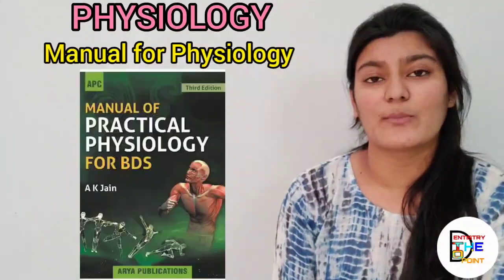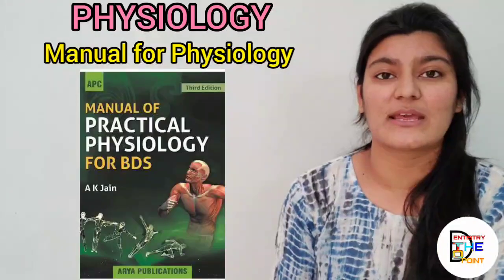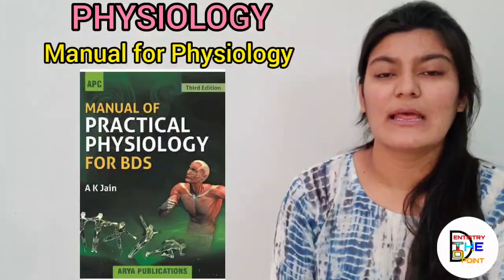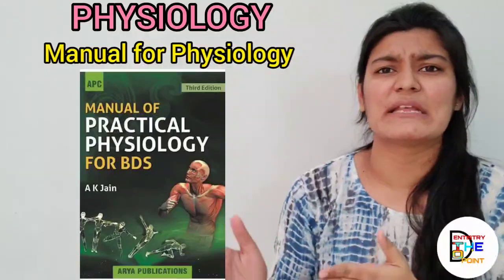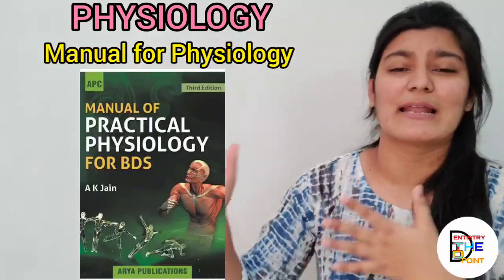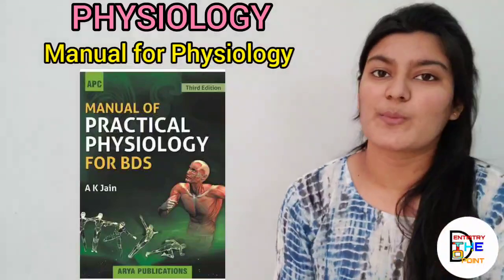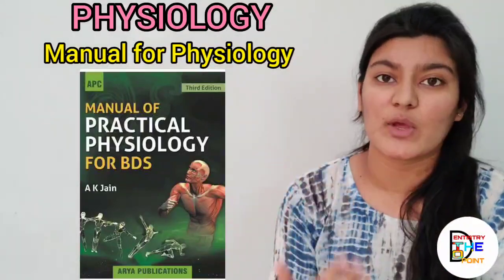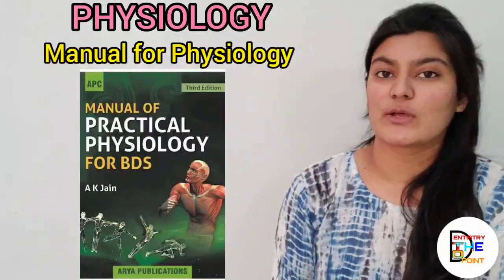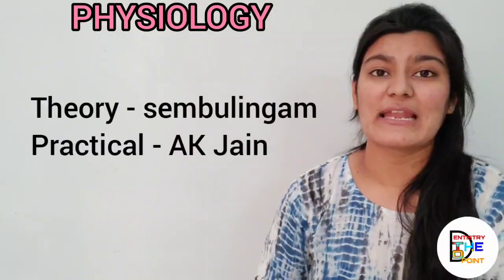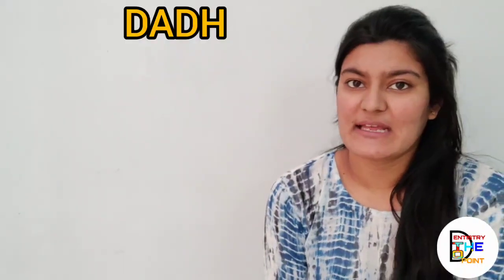For the physiology lab manual — for your practical work — you can go for AK Jain's lab manual book. It covers BT, CT, and all the experiments done in physiology very well, and it also includes viva voice questions at the end. It is a very helpful book for practical purposes. So the best combination would be AK Jain as the lab manual and Sambo Lingam as the theory book.